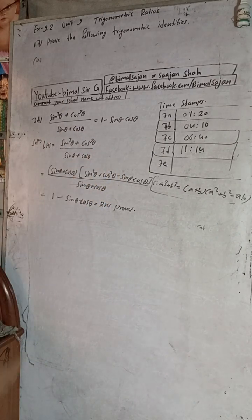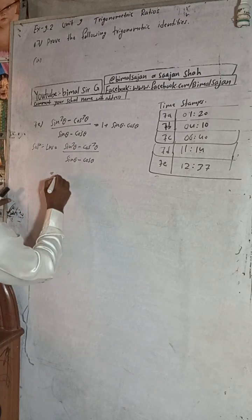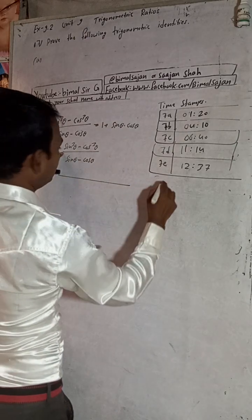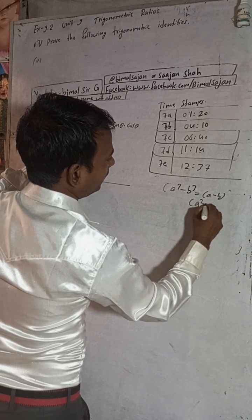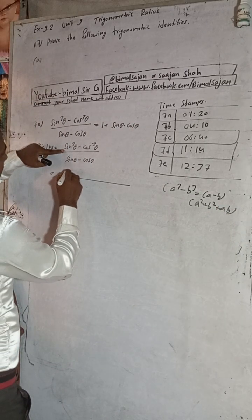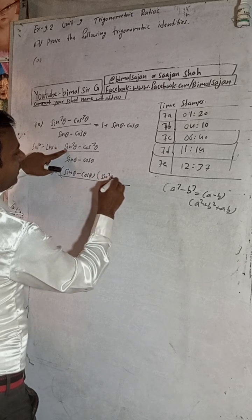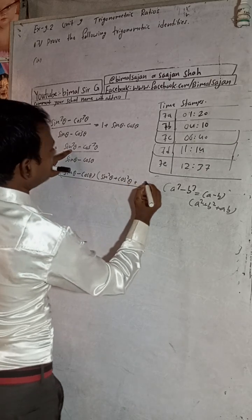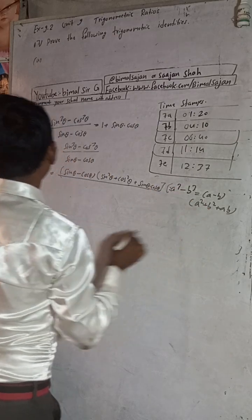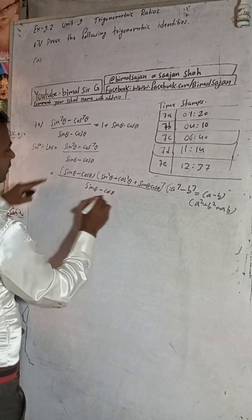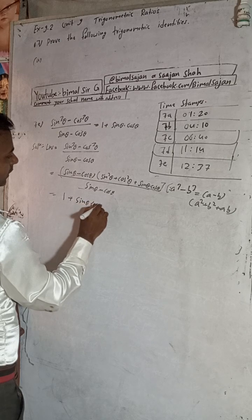This is question 7e. The time stamp is 12 minutes 37 seconds. LHS uses the a³ minus b³ formula: (a minus b)(a² plus b² plus ab). Here this is sin θ minus cos θ, and in the bracket: sin²θ plus cos²θ plus sin θ·cos θ. Sin θ minus cos θ cancels, and sin²θ plus cos²θ equals 1, plus sin θ·cos θ equals RHS. Proved.